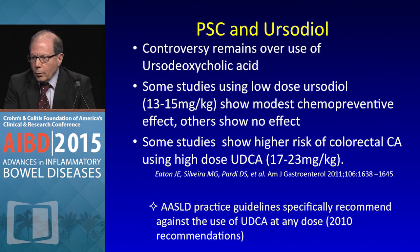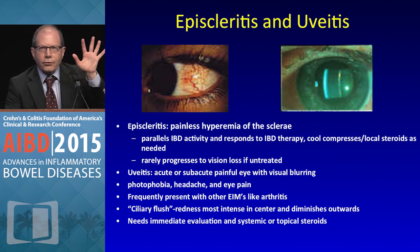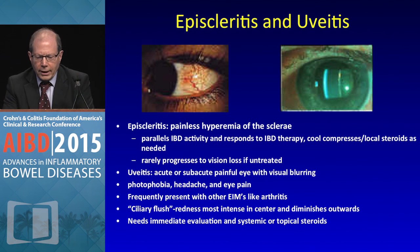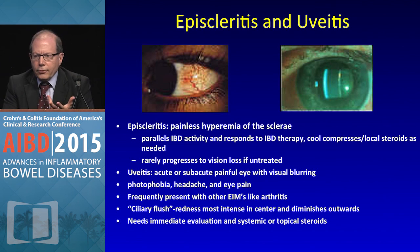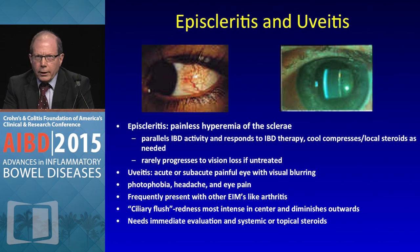Regarding ocular manifestations: episcleritis isn't bad — it's painless hyperemia and parallels IBD activity. However, remember that patients on steroids may not have symptoms but can develop posterior cataracts, so you should have patients examined regularly. Uveitis is more concerning — patients complain about blurry vision and will likely need topical steroids. When they report blurry vision, make sure they see an ophthalmologist.